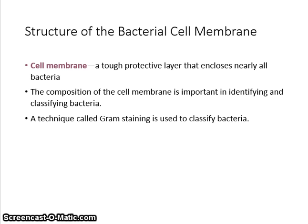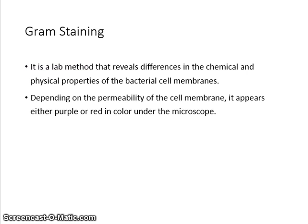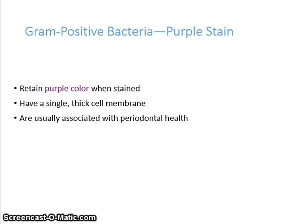A technique called Gram staining is used to classify bacteria. Gram staining is a lab method that reveals differences in the chemical and physical properties of the bacterial cell membranes. Depending on the permeability of the cell membrane, it appears either purple or red in color under the microscope.